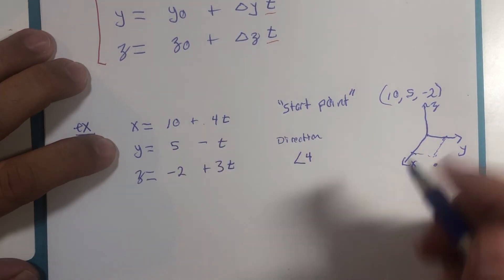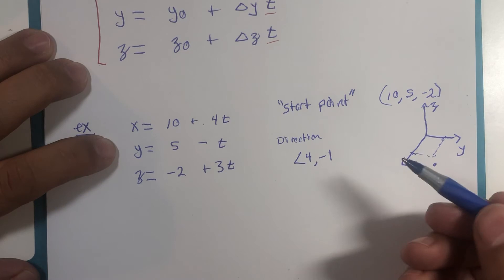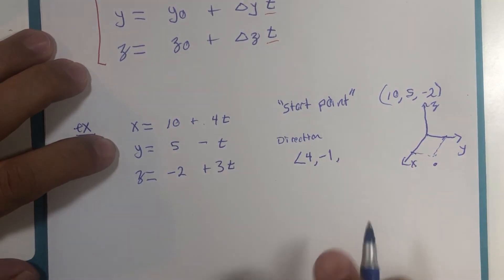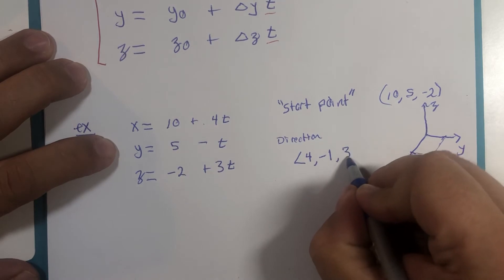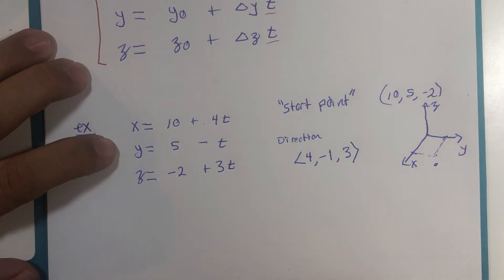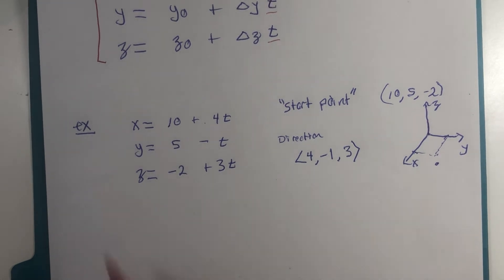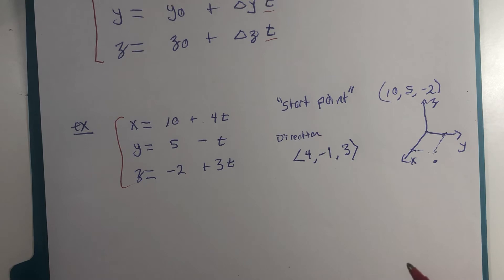That'll be our starting point, and then from that point our direction that we'd be going is the direction where it is 4 units in the positive x direction, -1 unit in the y direction, and a positive 3 units in the z direction. So the line would be going - if you were sitting here with me right at my paper and I held my pen the correct way, you might almost believe that, but it might take a little bit of extra imagination.